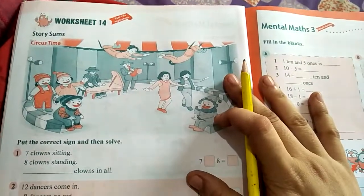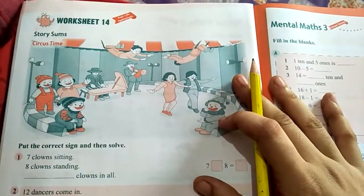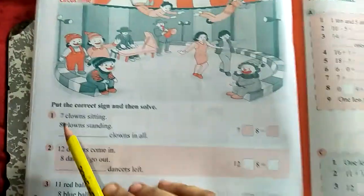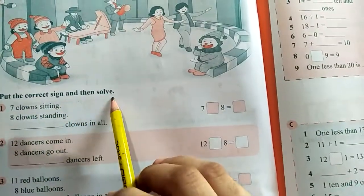We are using workbook page number 44, worksheet 14, and this is story sum. Put the correct sign and solve them.